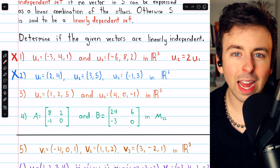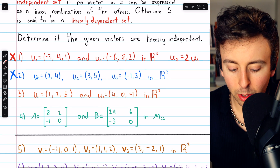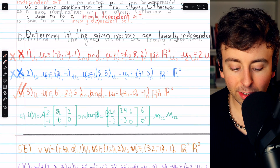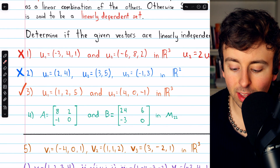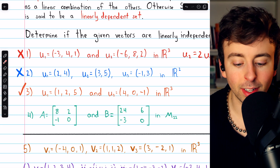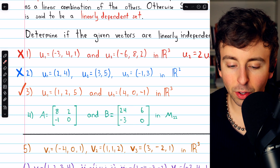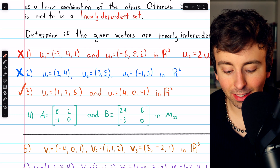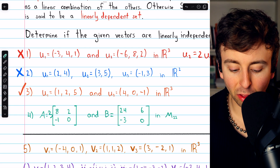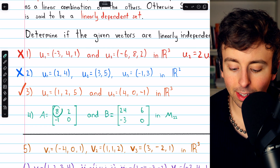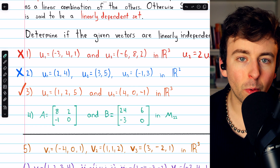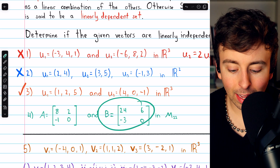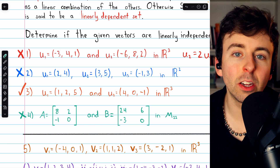If we had a third vector we'd have to do a little more work, which we'll see in the final two examples. But if we only have two vectors, them not being multiples of each other means they're linearly independent. Next, example four: these are two matrices in the vector space of all 2×2 matrices. Are these two matrices linearly independent? You should ask: can I multiply A by anything to get B? The answer is yes — if we multiply matrix A by the scalar 3, it becomes matrix B: 8×3 is 24, 2×3 is 6, and so on. So B is just 3 times A — not linearly independent.